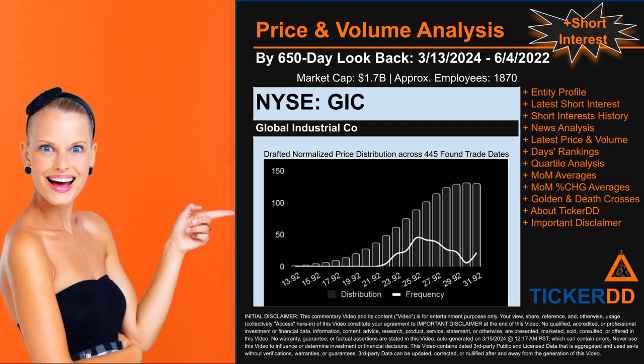Now that we have made our lawyers happy, capitalist brothers and sisters, let's get started. GIC went public on June 27, 1995, which was roughly 28 years and nine months ago. Looking back 650 calendar days from Wednesday, March 13, 2024, to Saturday, June 4, 2022, we found 445 applicable trade dates for use in our analysis of this ticker, which has a market capitalization of about 1.7 billion dollars. Based on available licensed data, we think that the company Global Industrial Co. behind this ticker has 1,870 full-time employees — consider that number to be an estimate and not an exact count.